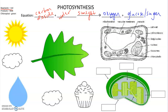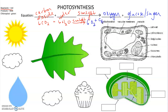If we were to write this as a chemical formula, it would look like this: 6CO2 plus 6H2O, add in some sunlight which provides the energy, and then we would get 6O2 plus C6H12O6.